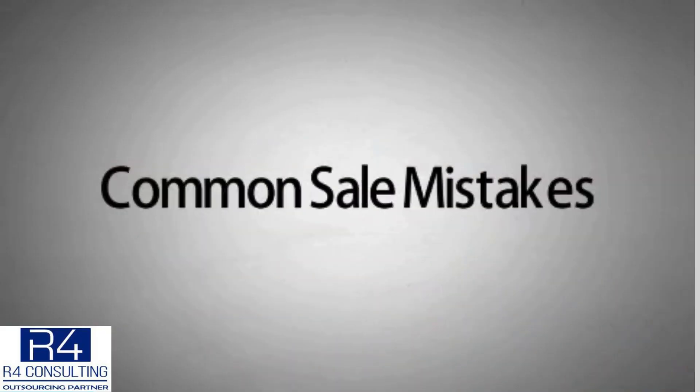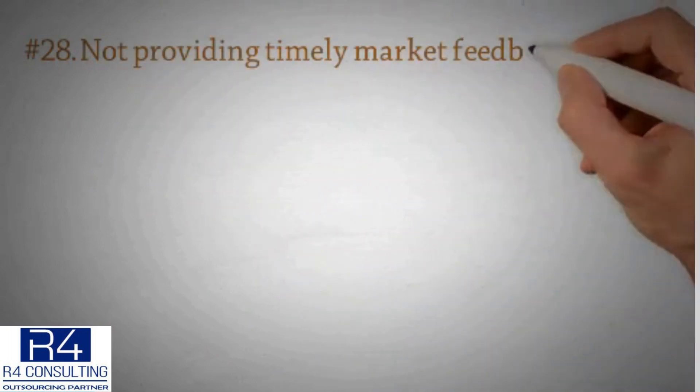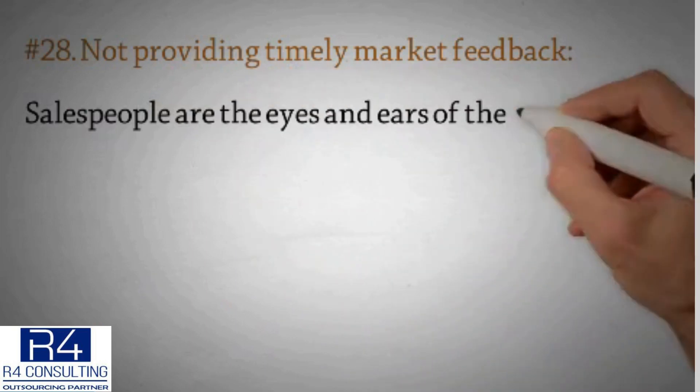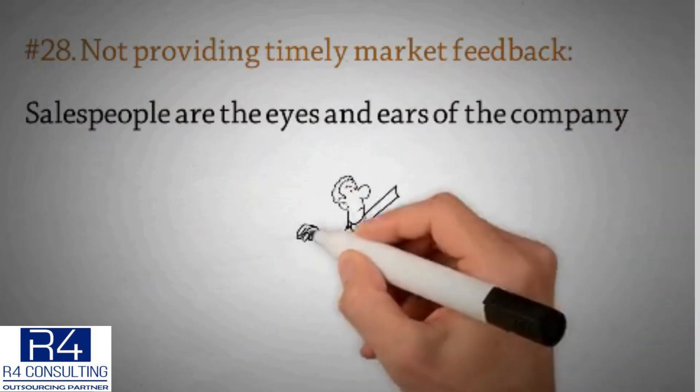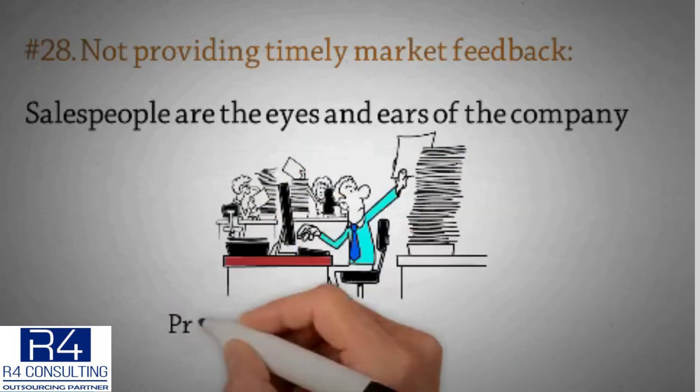Common sale mistakes number 28: not providing timely market feedback. Salespeople are the eyes and ears of the company. They are supposed to note all happenings in the marketplace and provide qualitative reports, be it on the product they sell.